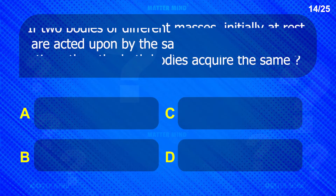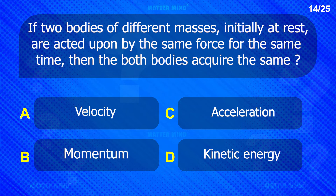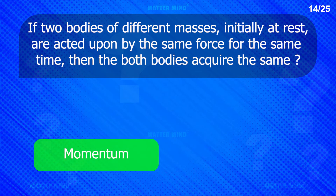If two bodies of different masses initially at rest are acted upon by the same force for the same time, then both bodies acquire the same momentum.